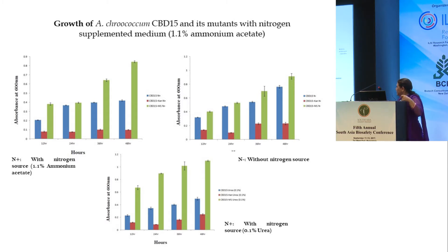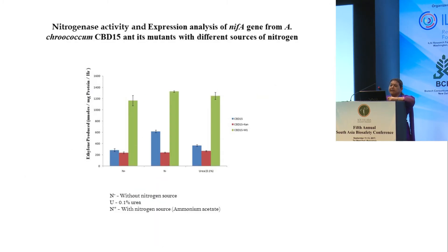We then examined the growth pattern of this mutant — the one with deletion in NIF-L, effectively knocked out, and carrying the synthetic sigma 70-based promoter. We found that it was able to grow well even in the presence of nitrogen. Similarly, nitrogenase activity, or ARA activity, was also studied. We found that in the presence of 0.1 percent urea in the media, it is able to grow well and nitrogenase activity is maintained.